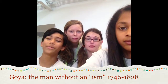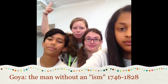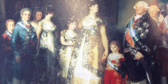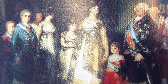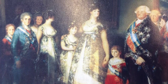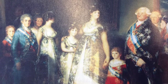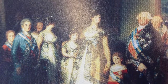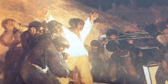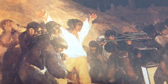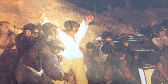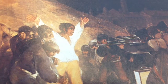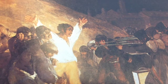Goya: the man without an ism. Goya was a lifelong rebel. His work fit no category, and he was often hailed as the first modern painter. His works revealed people and events for who and what they really were. In 1792, he contracted an illness that left him completely deaf. He died in France after fathering 20 children.